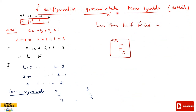Now for the D2 configuration. For 2 electrons, S equals 1 plus 1 equals 1, so 2S+1 equals 2 into 1 plus 1, which equals 3. For the D orbital, the magnetic quantum numbers are plus 2, plus 1, 0, minus 1, minus 2. The first electron takes plus 2 and the second takes plus 1, so the total L equals 3, which gives the F label.